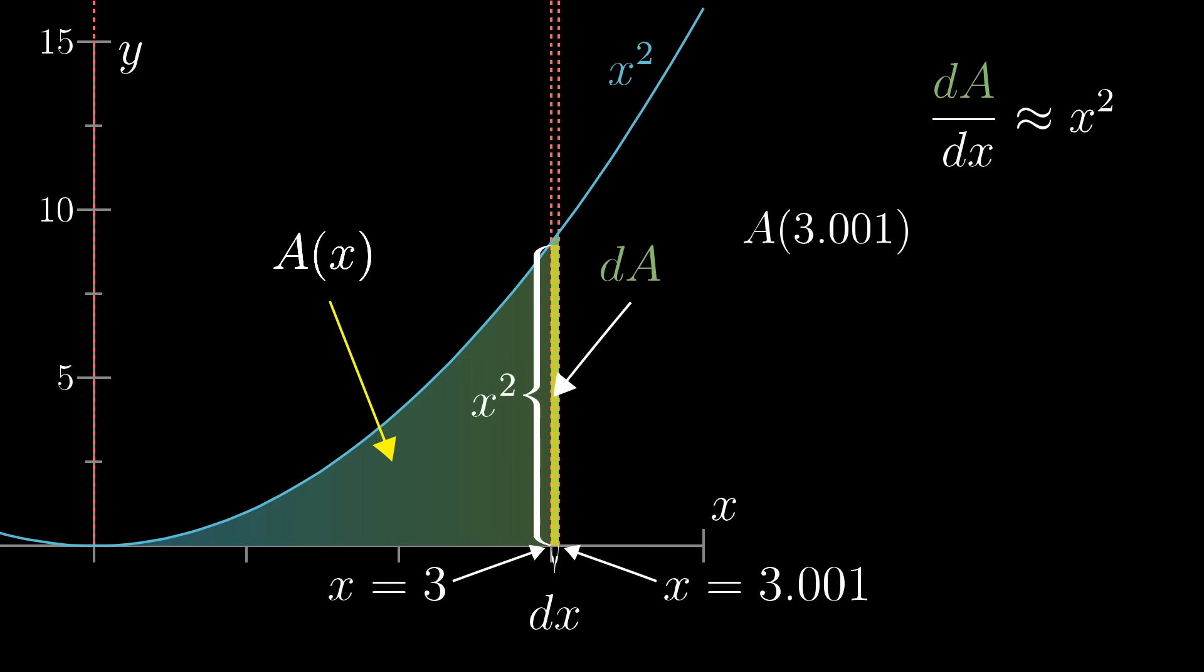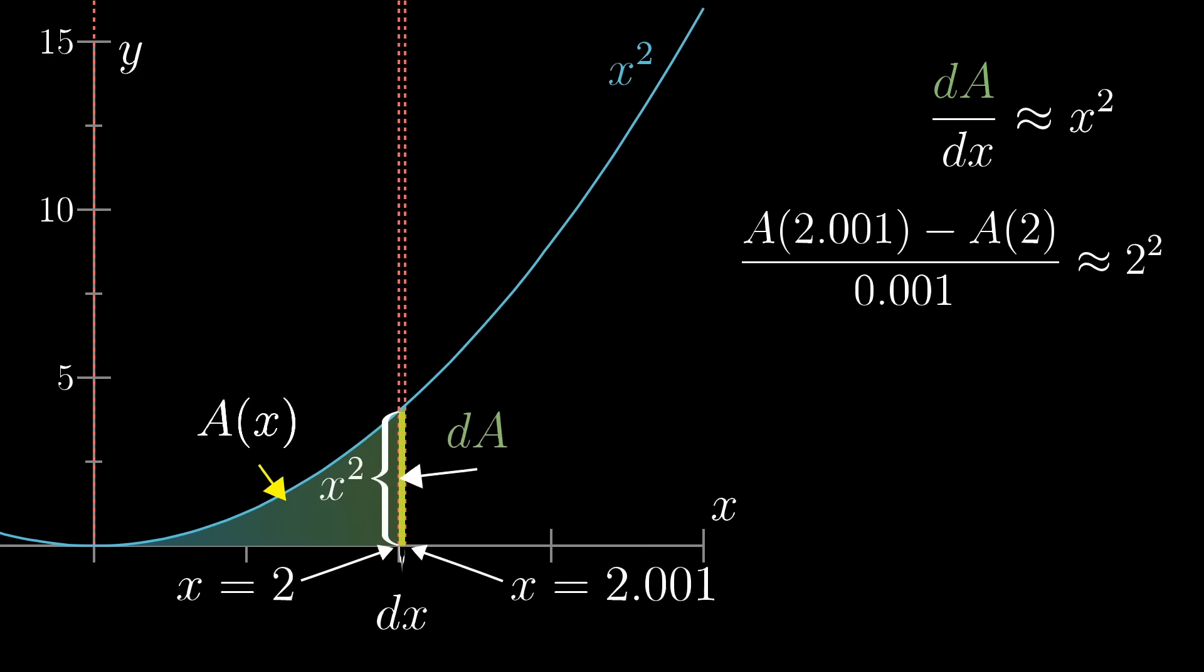That change, divided by the difference in the input values, which in this case is 0.001, should be about equal to the value of x squared for the starting input, in this case 3 squared. And this relationship between tiny changes to the mystery function and the values of x squared itself is true at all inputs, not just 3.